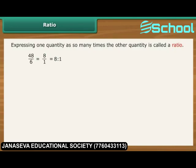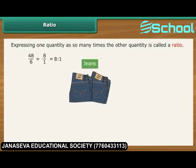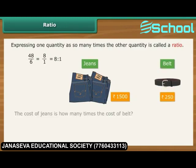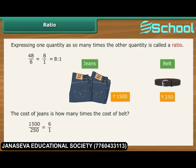Let us look at another example of ratio. Tushar bought a pair of jeans for Rs. 1500 and a belt for Rs. 250. The cost of jeans is how many times the cost of the belt? To calculate the ratio, first divide 1500 by 250. It is the same as 6 divided by 1. Express it as a ratio, that is 6 is to 1. Therefore, we can say that the pair of jeans is 6 times more costly than the belt.